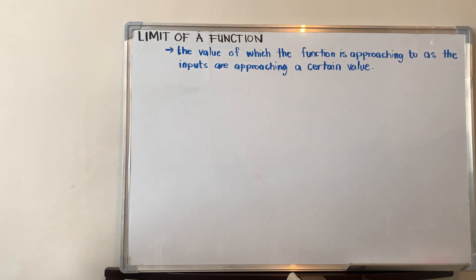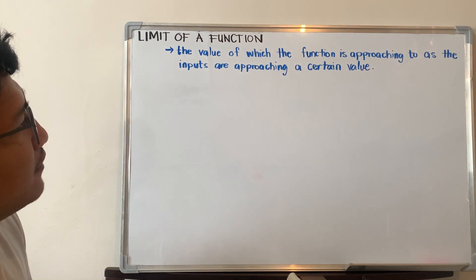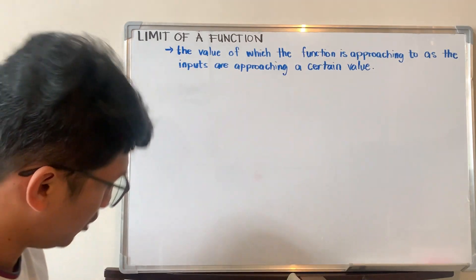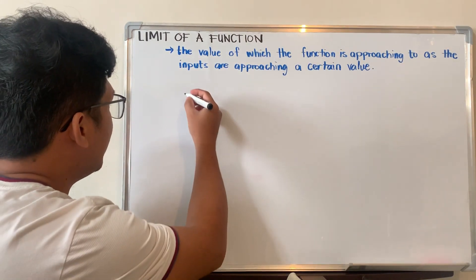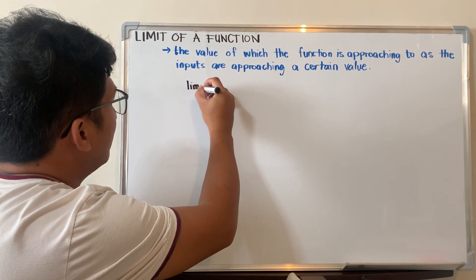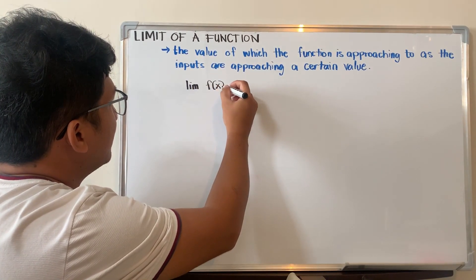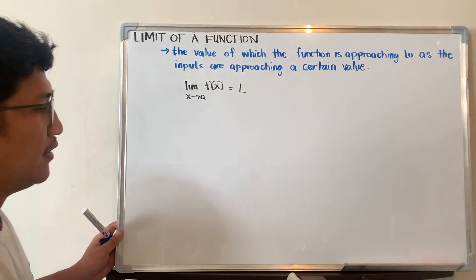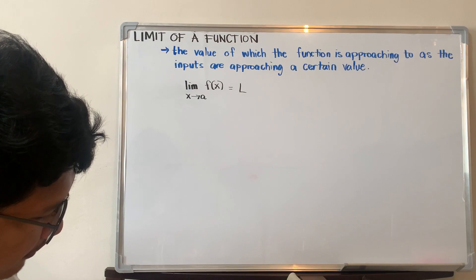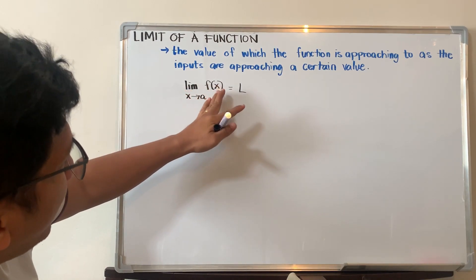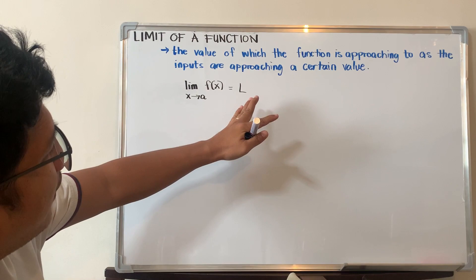The limit of a function is the value of which the function is approaching to as the inputs are approaching a certain value. So we're talking about the value of the function actually. In symbols, we say the limit of f of x as x approaches a is equal to L. The limit of f of x is equal to L as x approaches a.